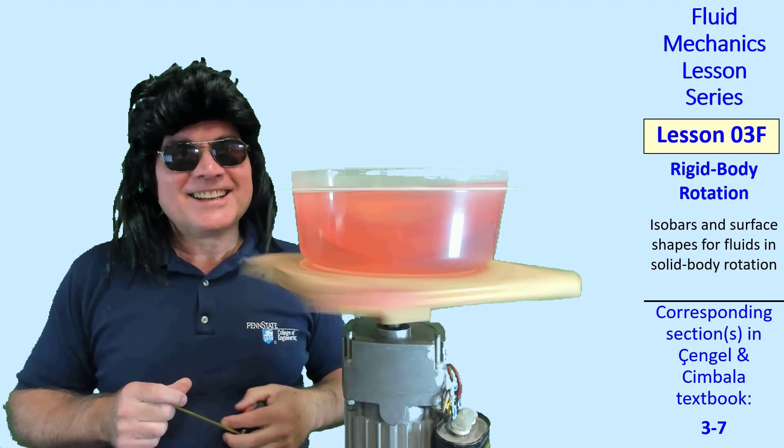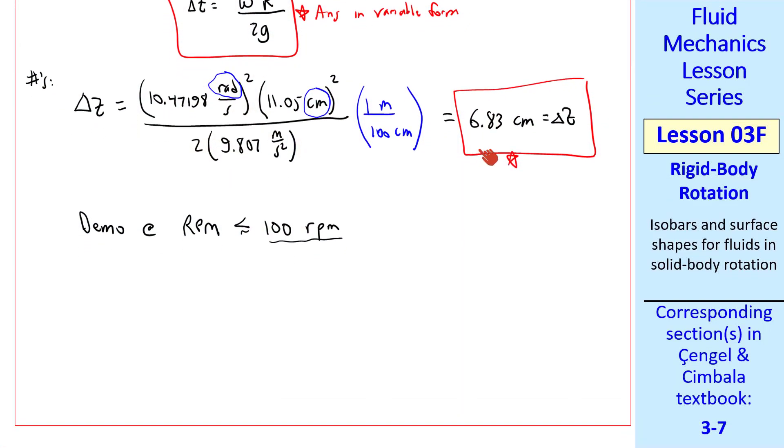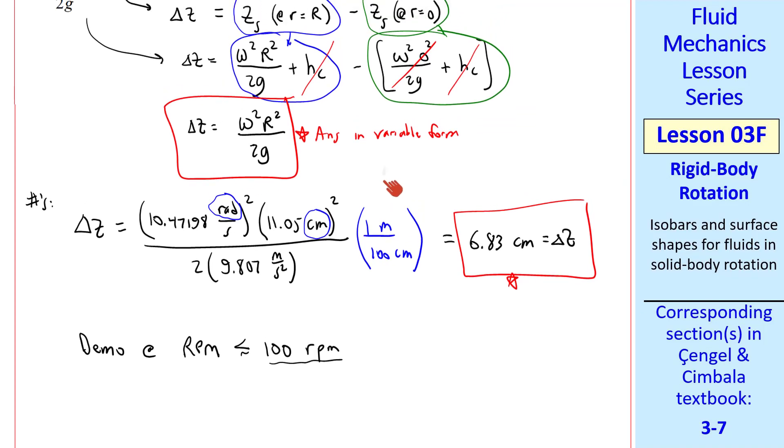Awesome, dude. So you can see the nice paraboloid that we formed, and the agreement was pretty close, but not perfect since the rpm was a little less than 100 rpm. Finally, let's look at a couple applications.